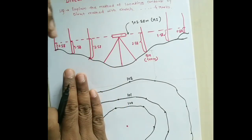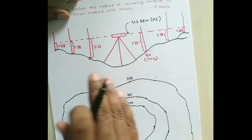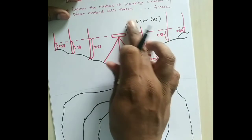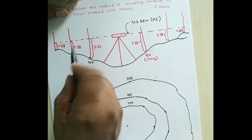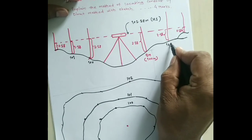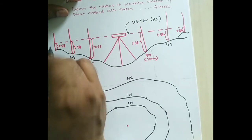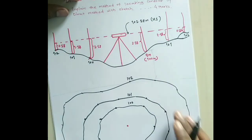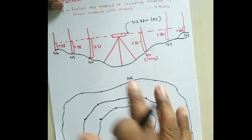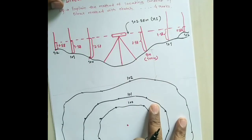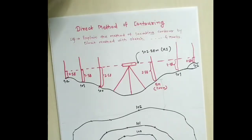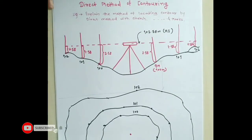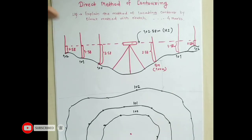To plot the 100, 101, and 102-meter contours, we find the corresponding staff readings by subtracting each contour value from the height of instrument. That is the direct method of contouring — we directly trace the contour on the ground. It is a slow and tedious method, but it gives very accurate results, so wherever greater accuracy is required in contouring work, we prefer this direct method. In the next video, we will learn the indirect method of contouring. Thank you.